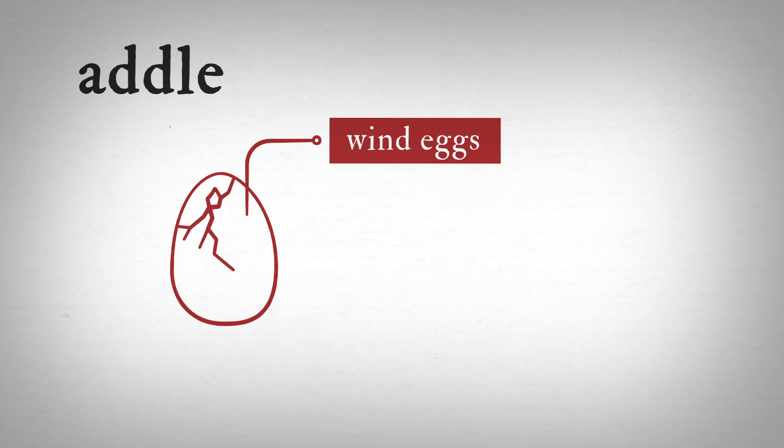The story of the word addle begins with the fact that sometimes hens lay eggs whose shells are so thin that the eggs break apart before the chicks can hatch. 2,500 years ago, the ancient Greeks called these wind eggs, presumably because the shells were as insubstantial as the wind.